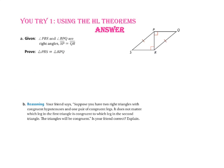In part B, your friend says: suppose you have two right triangles with congruent hypotenuses and one pair of congruent legs — it does not matter which leg in the first triangle is congruent to which leg in the second triangle. Is your friend correct? Yes, your friend is correct. To satisfy the hypotenuse-leg theorem, you just have to meet three criteria: first, you have two right triangles; second, the hypotenuses are congruent; and third, you have one pair of congruent legs. Since this scenario meets all three criteria, your friend is correct and the triangles will be congruent.